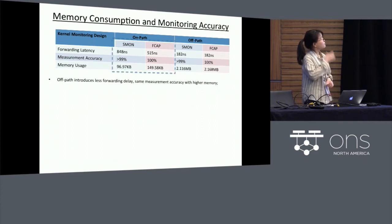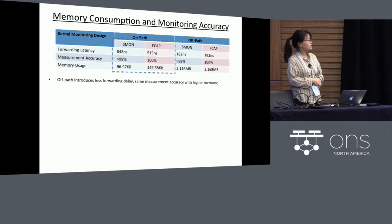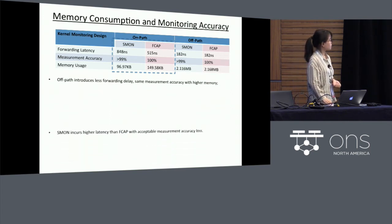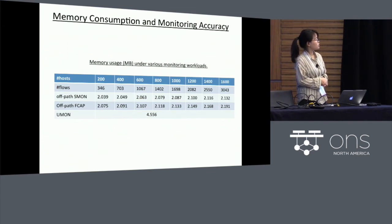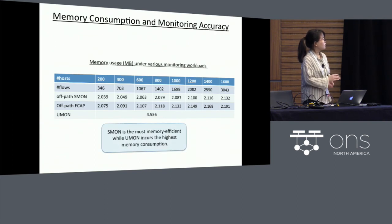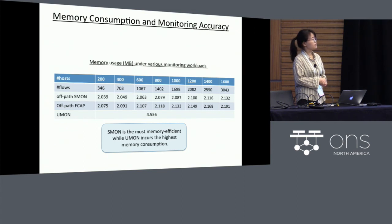Compared to the FCAP, the SMON requires less memory usage, since it compresses those flow stats in the Bloom Filter lookup table, but it introduces no significant accuracy loss. And we also conduct an experiment to measure the memory usage of the different designs under various monitoring workloads. As we can find here, the UMON incurs the highest memory usage, while SMON is the most memory efficient, which is explained earlier.